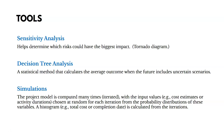The most common simulation is the Monte Carlo simulation, where the project model is computed many times with input values like cost estimates or activity durations chosen at random. You're simulating what your project would be and running it many times with certain risks and cost or duration estimates to see what is most likely to happen. The output is a histogram showing total cost or the completion date for your project.